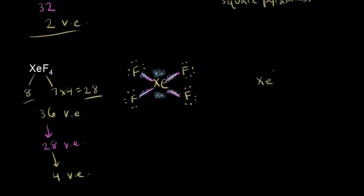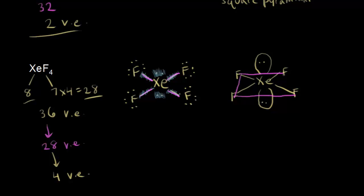Since the two lone pairs want to get as far from each other as possible, we place them 180 degrees apart — one above and one below. The 4 fluorines then occupy the four equatorial positions. When we ignore the lone pairs and look at the shape, we have a square that is planar. We call this square planar, with ideal bond angles of 90 degrees.